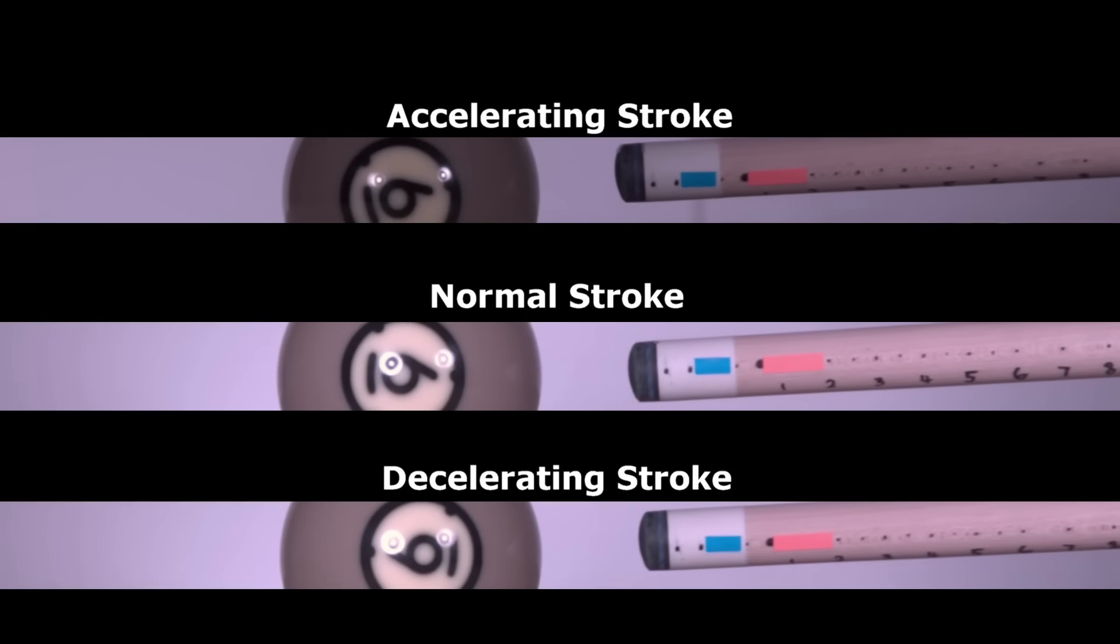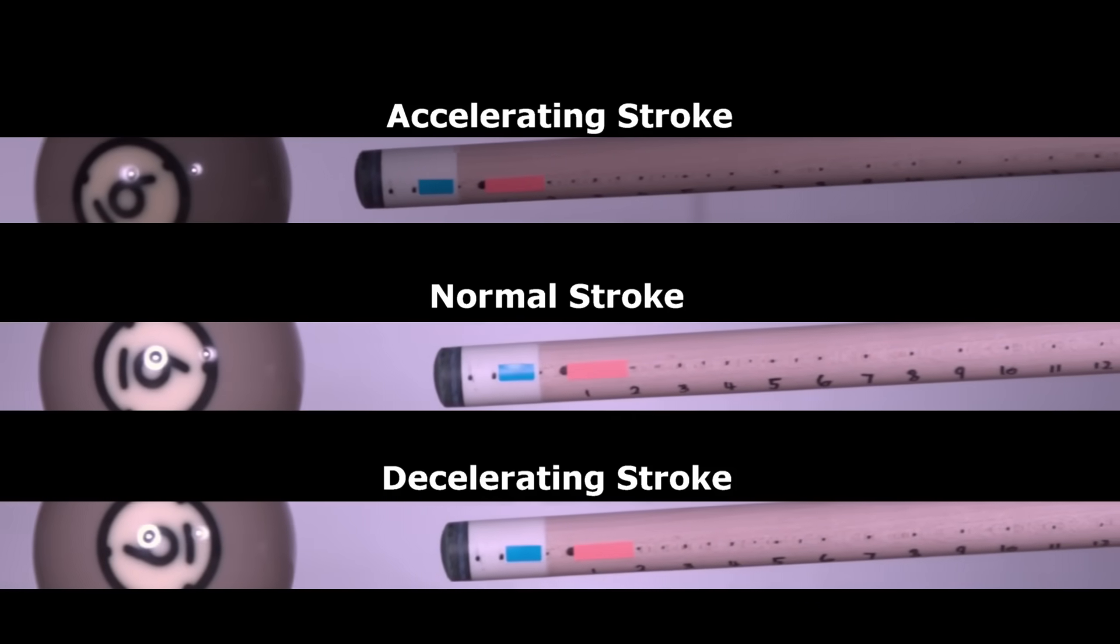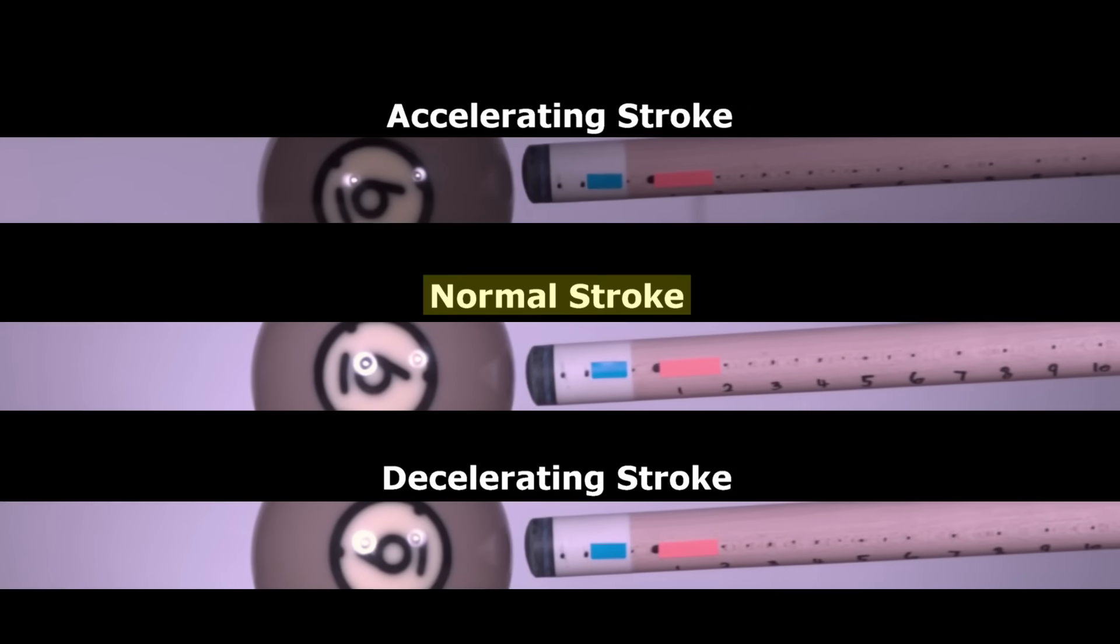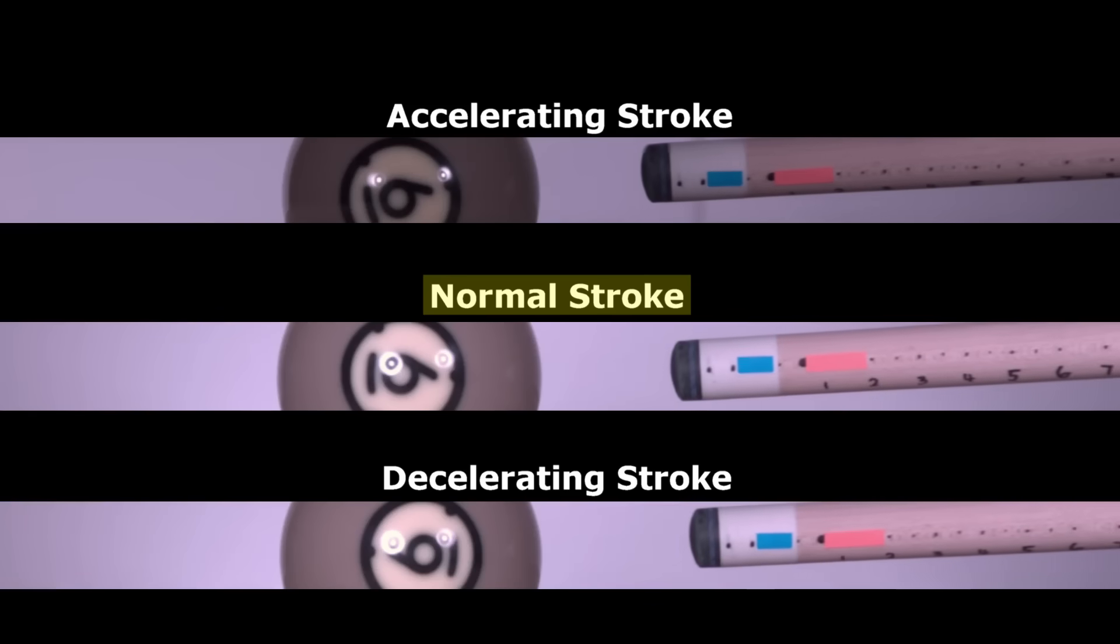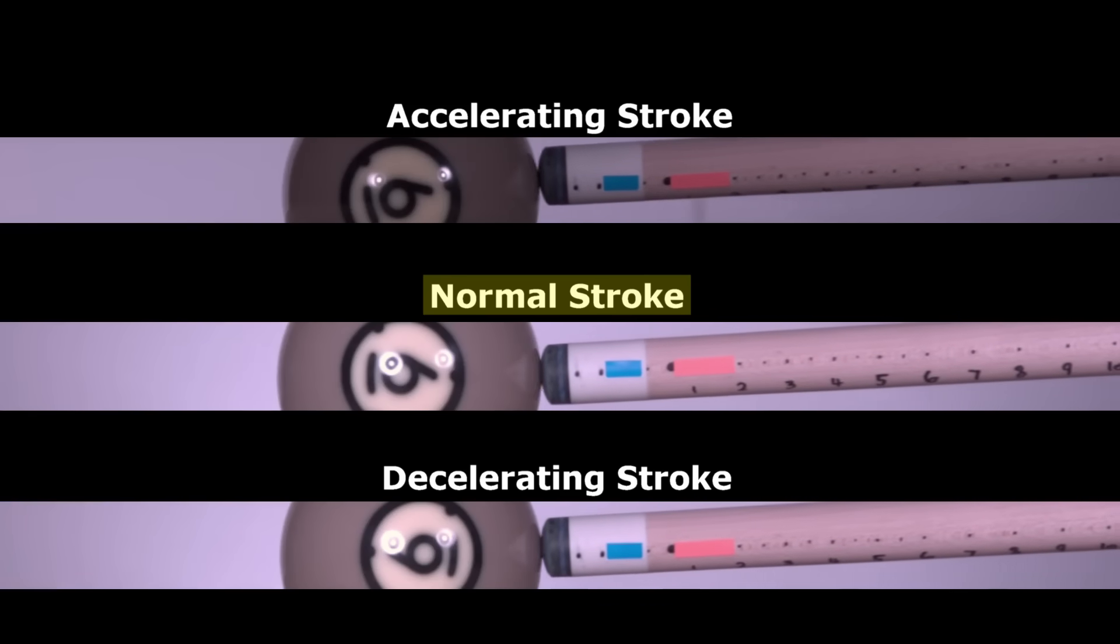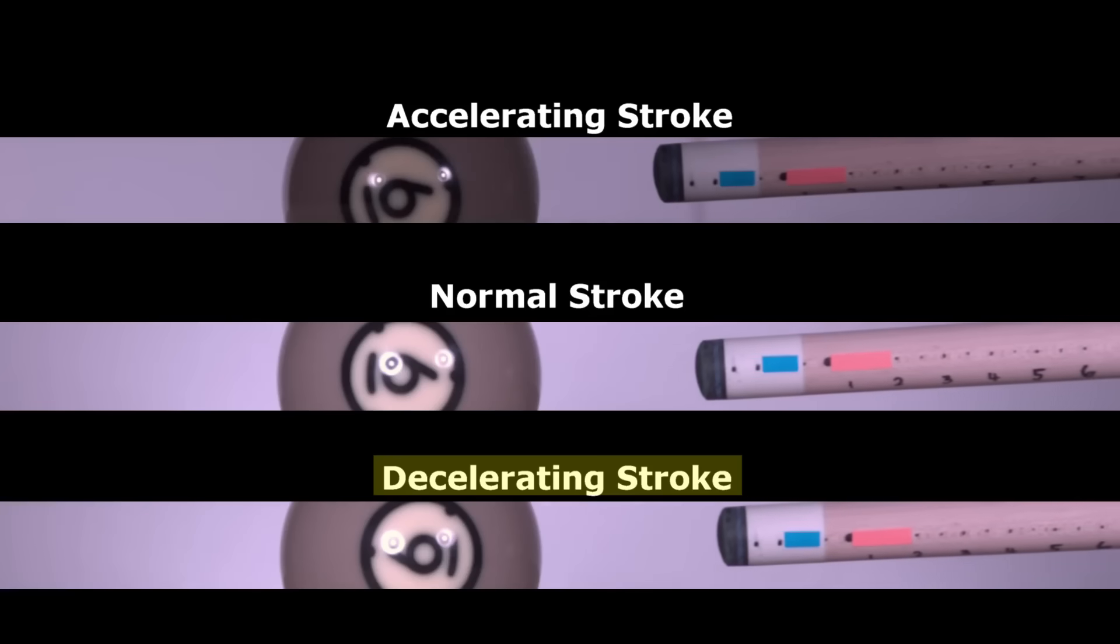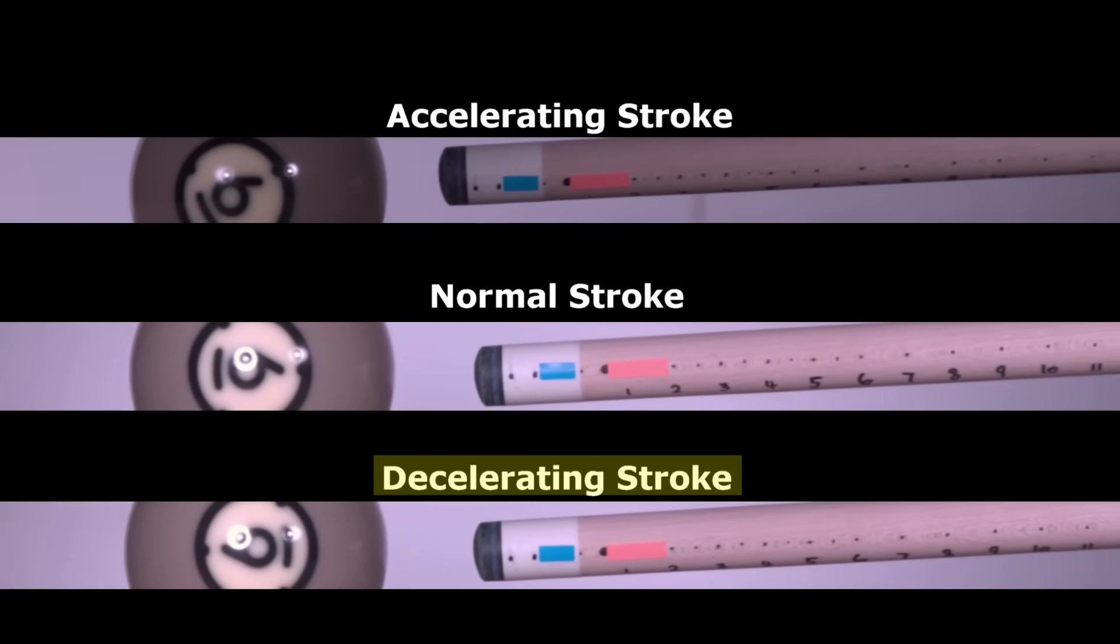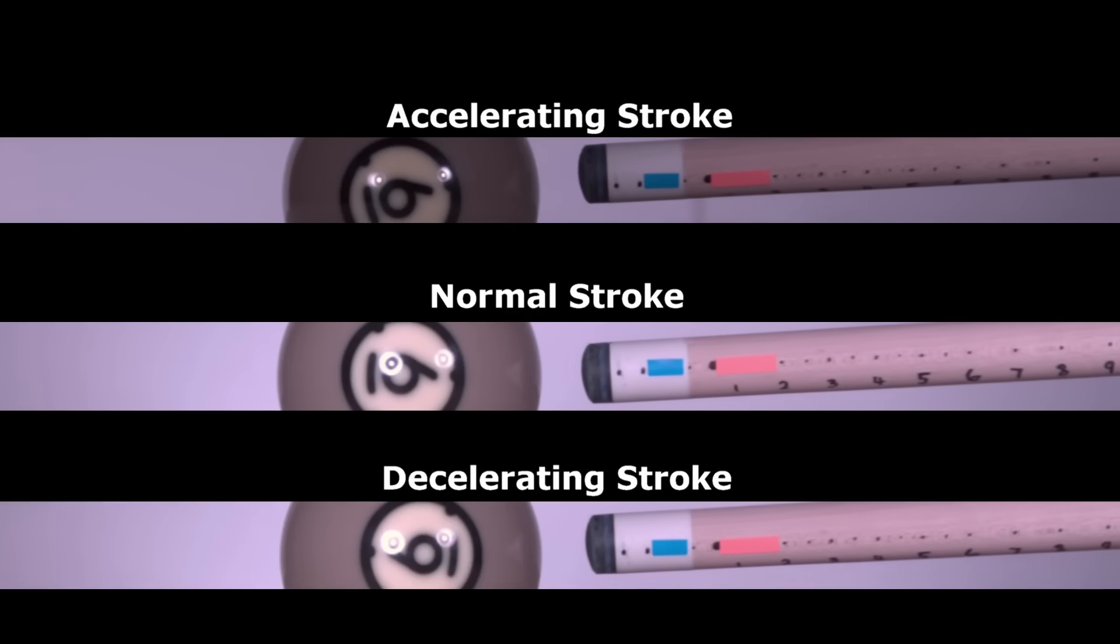Here are the videos for three different strokes that resulted in very close to the same cue speed at tip contact. The top video is of an accelerating stroke. The middle video is for a typical stroke with the cue speed reaching a maximum and not changing at cue tip contact, so in this case there is no acceleration at contact. The bottom video is of a decelerating stroke where the cue speed is slowing before tip contact.